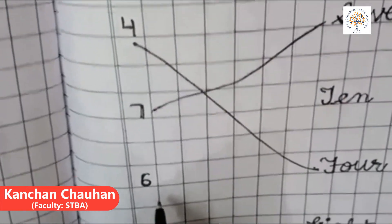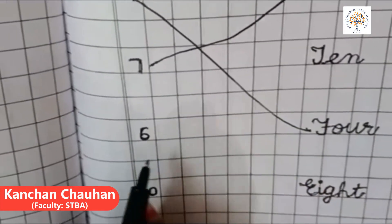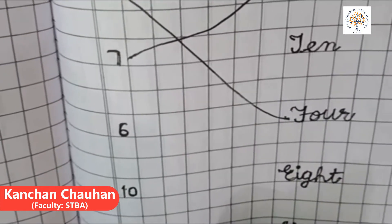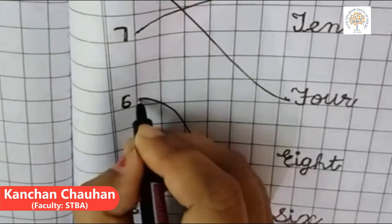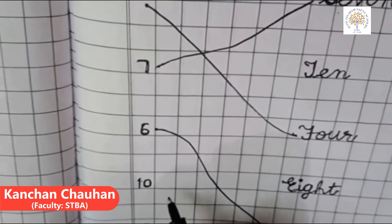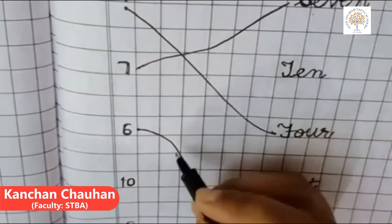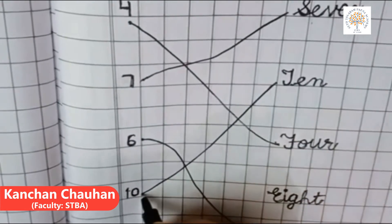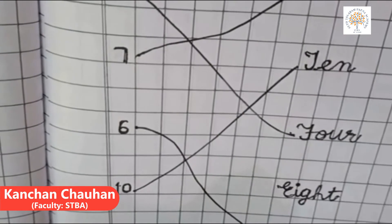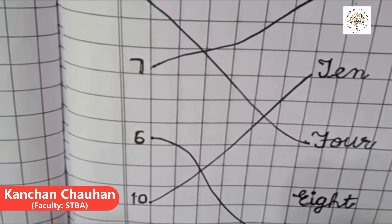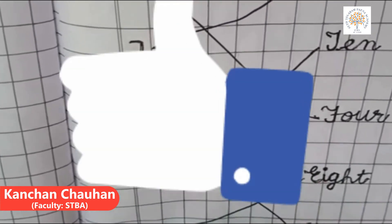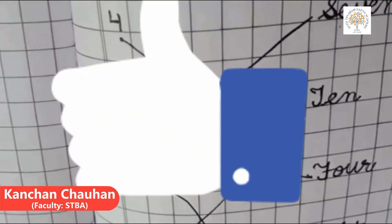6. For numeral 6, number name 6 is here. S-I-X-6. So, match it with numeral 6. Next is 10. T-E-N-10. 10 is here. So, match it with 10. Then, 8. E-I-G-H-T-8. So, you have to match this number name with its numeral. So, we have done it.